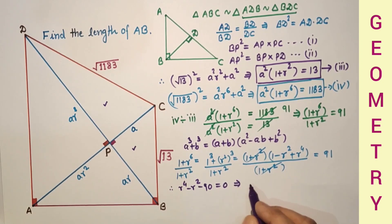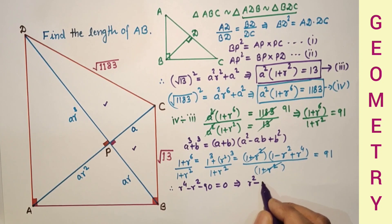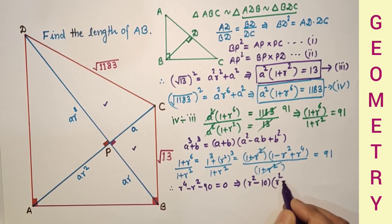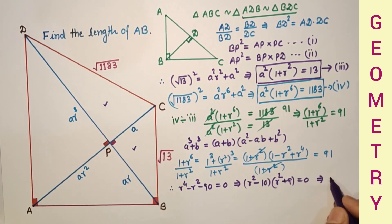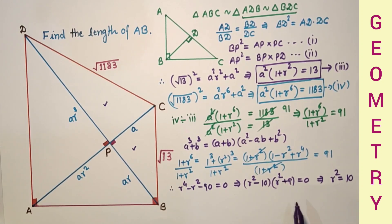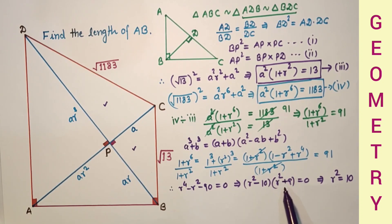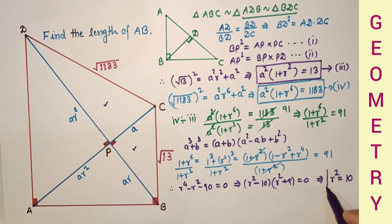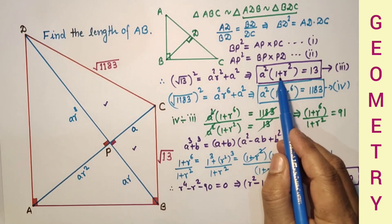Since r² = -9 gives an imaginary root, we reject that value. So taking r² = 10. Now substituting r² = 10 back into equation three: 13 = a²(1 + 10) = 11a², therefore a² = 13/11.